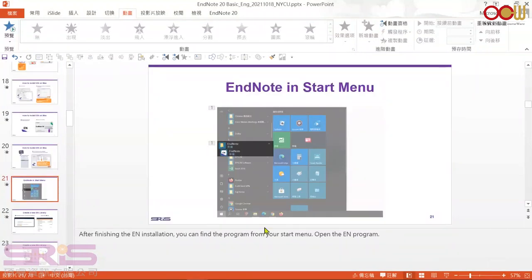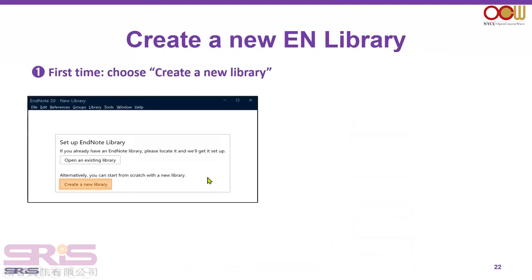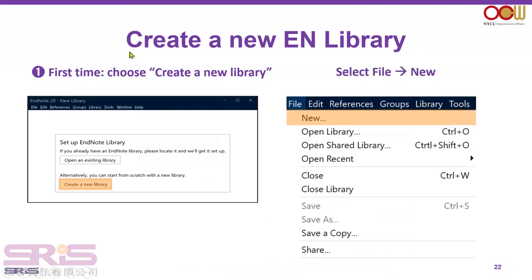Now let's move on to how to create a new library. You can find EndNote in your Start menu. Click on the icon. The first time it will show a window to choose to create a new library. If you have an existing library, you can choose that option. After the first time, you can go to the File menu and choose New to create a new library.